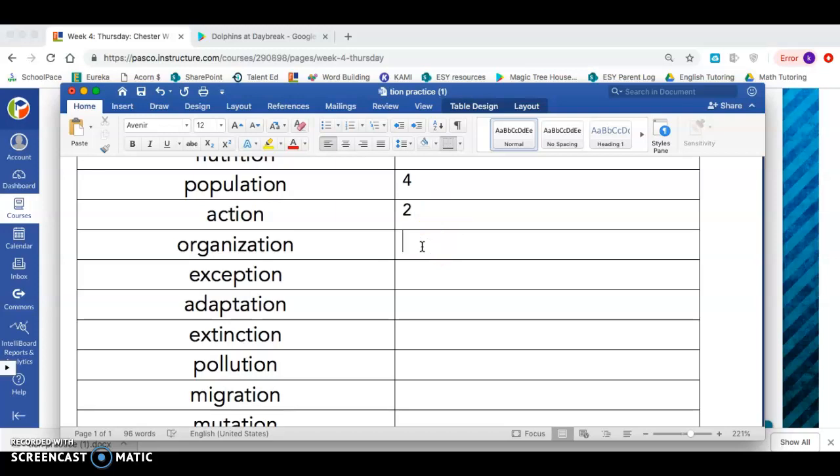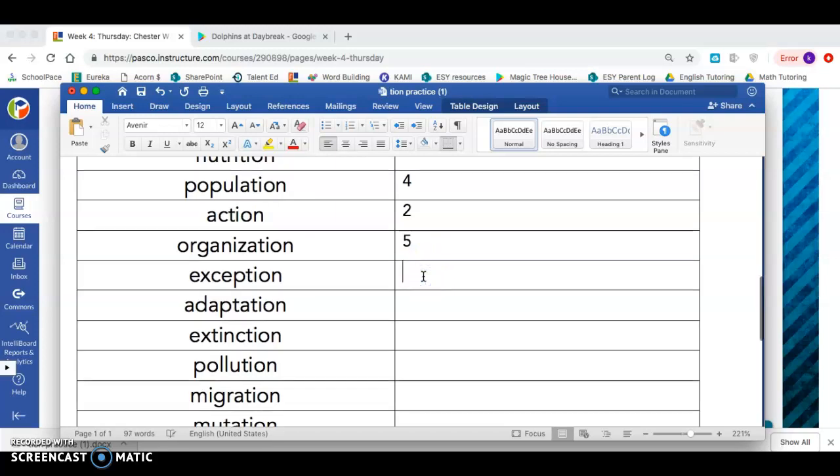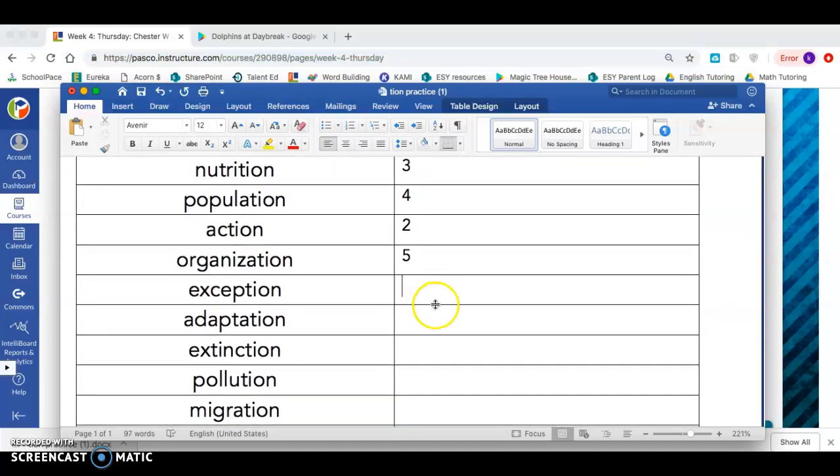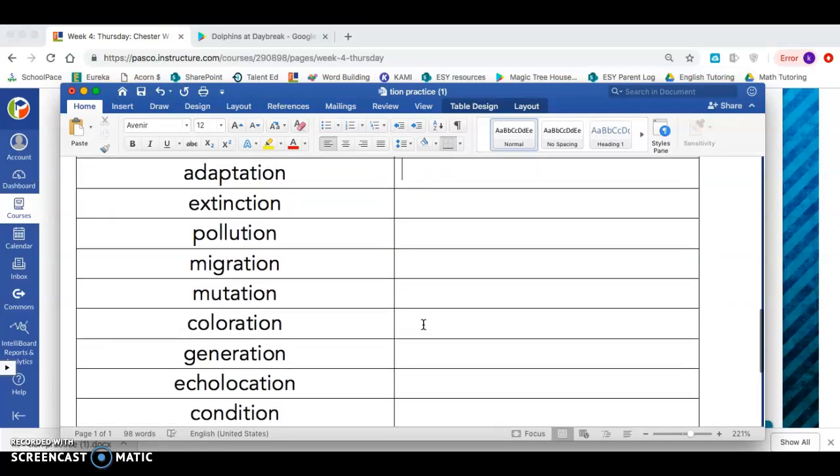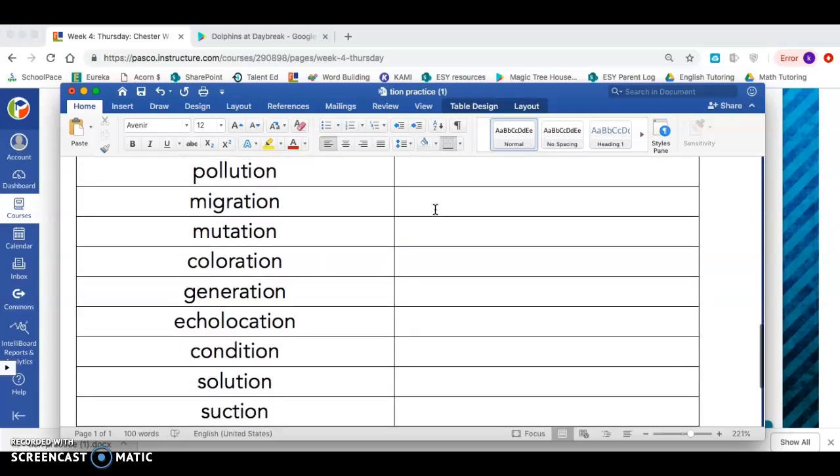Organization, that one's long. That also has five syllables, like communication does. Exception, I clap three times. Adaptation, I clap four times. Extinction, I clap three times. Pollution, also three syllables.